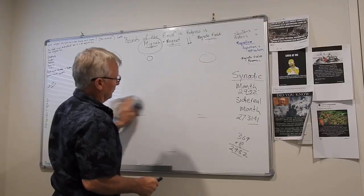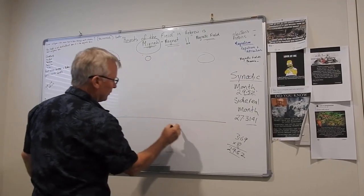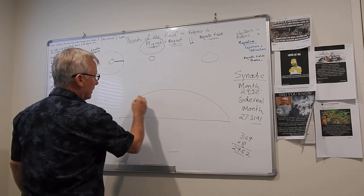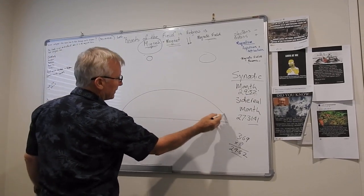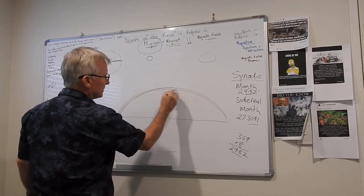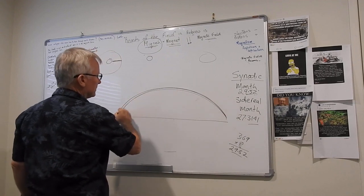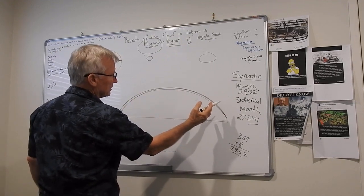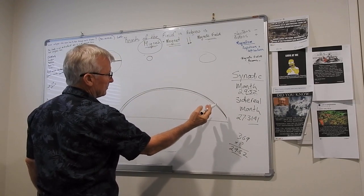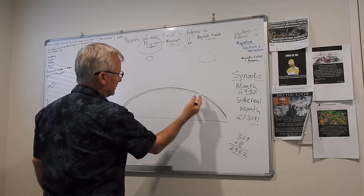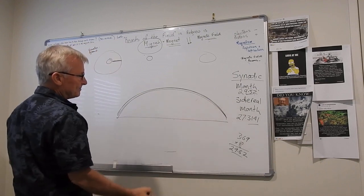We have to understand there's the physical down here on earth, but this is a non-physical realm. Nothing up here has mass. None of those celestial bodies have any solidness about them. There's no density. There's nothing.